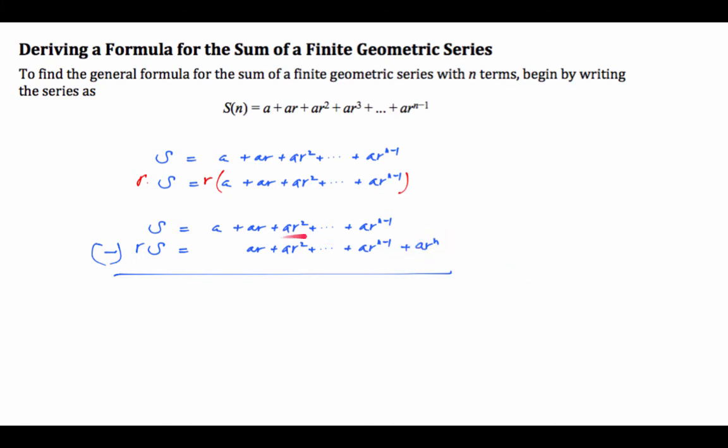And this ar to the n minus one becomes ar to the n. And what you'll notice is that this right here, if I have to subtract these two equations, it cancels out. So let's subtract two equations. On the left-hand side, this one s minus rs gives you one minus rs. And here is a minus ar to the n. And we factor out the a and divide by one minus r.